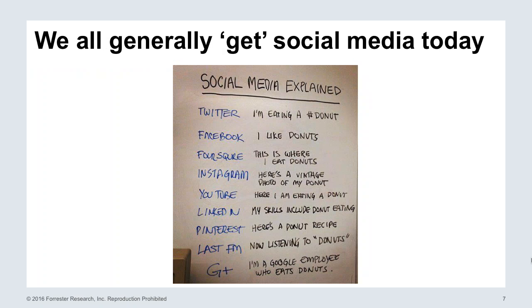We all generally get social media today. This picture is a funny illustration — it does a good job of saying I know what to do on each of these social networks. I know how to eat a donut and I know which social network to use when I eat it. On Twitter, I'm going to talk about eating that donut. On Facebook, I'm going to like donuts. On Foursquare, this is where I eat donuts. On Instagram, here's a vintage photo of my donut.